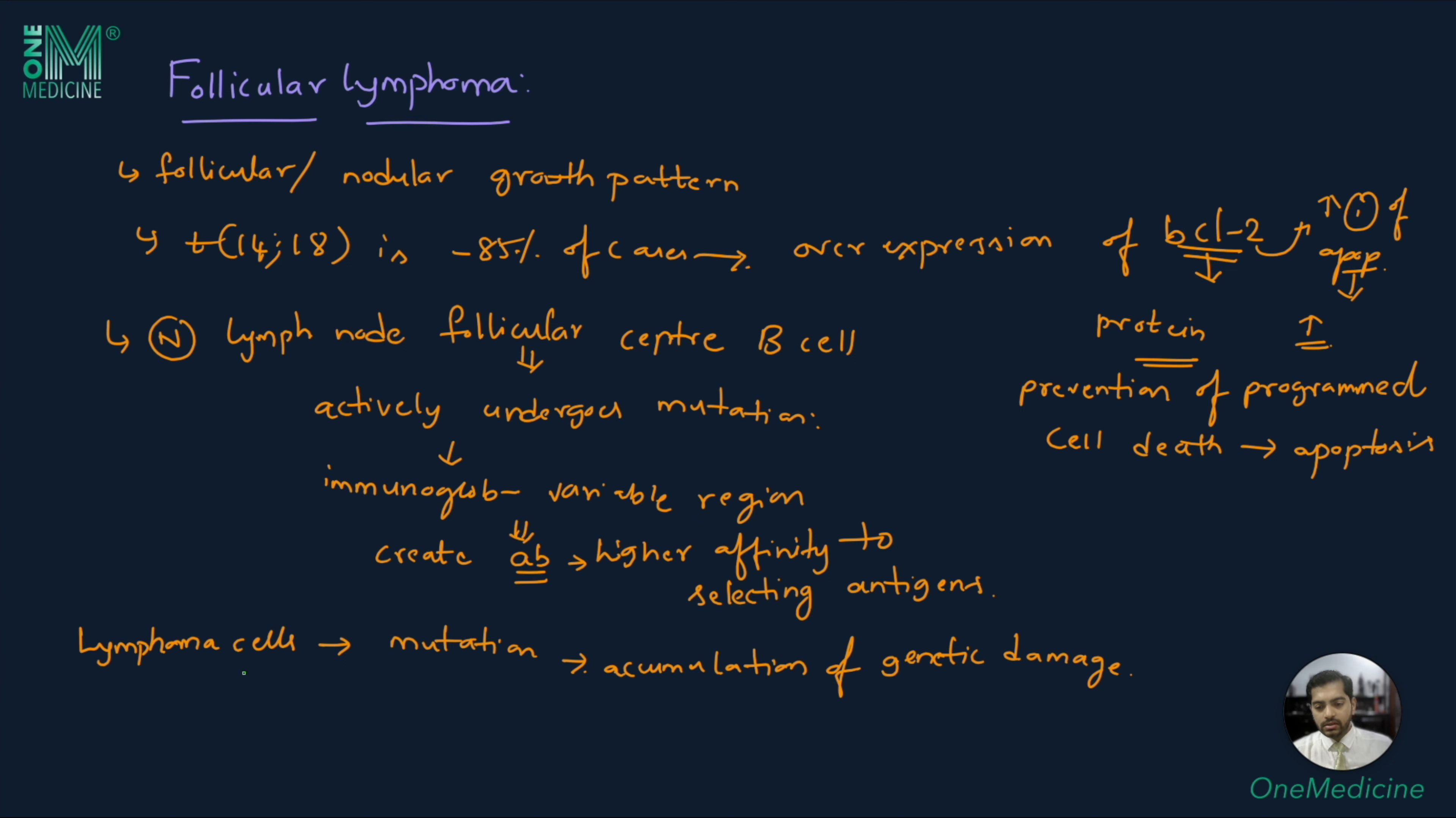When these lymphomas accumulate damages such as mutated P53, this leads to a rapid growth of the cells and also transformation into diffuse large B cell lymphoma, which is an aggressive lymphoma that is refractory to therapy. Most patients who have mortality related to follicular lymphoma usually have this histologic transformation.